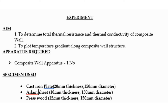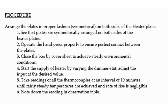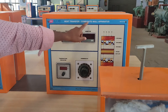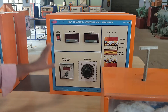Apparatus required: composite wall apparatus. The specimens we are using in our lab are cast iron plate, aluminum sheet, and presswood. Now we will see the procedure in detail. This is our heat transfer through composite wall apparatus.